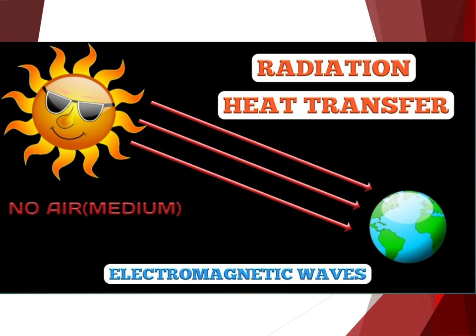Our last type of heat transfer is radiation. Radiation is the transfer of energy by electromagnetic waves. Energy from the sun arrives on Earth by radiation. Unlike conduction and convection, it can travel through a vacuum. Thermal interaction by radiation does not require any physical contact.